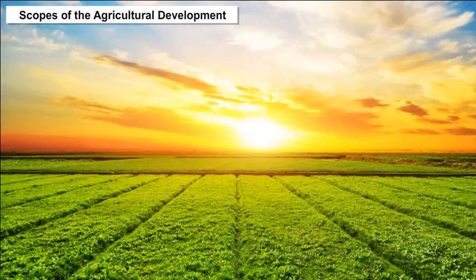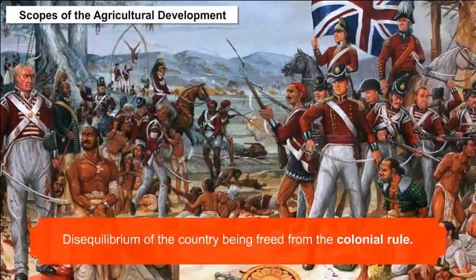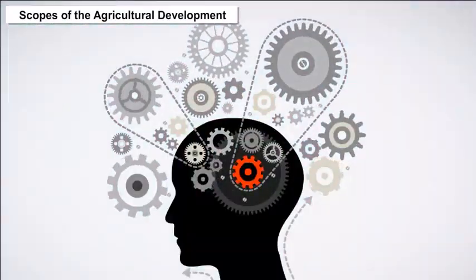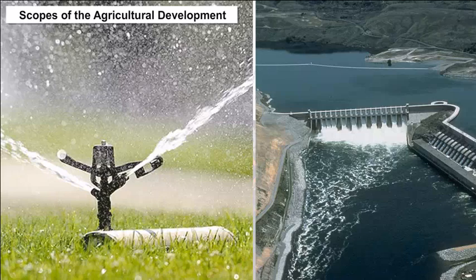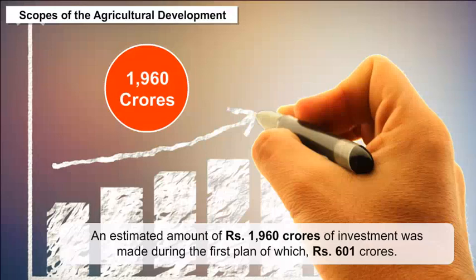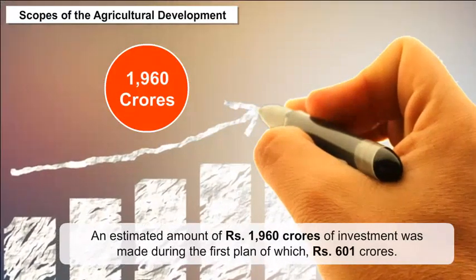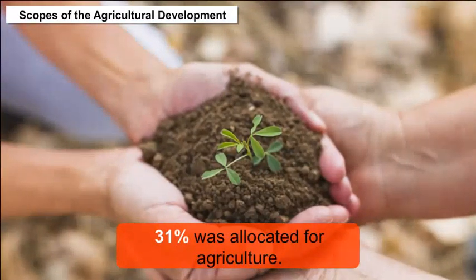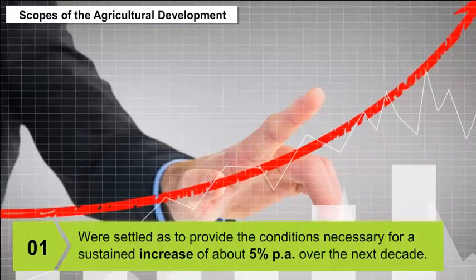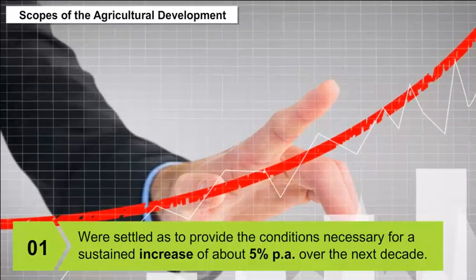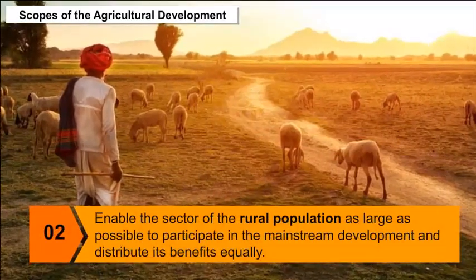The chief objective of the first five-year plan was to restore the disequilibrium of the country after colonial rule. Earlier plans included long-lasting projects like irrigation and river dam constructions. An estimated investment of 1,960 crore rupees was made during the first plan, of which 601 crore rupees — nearly 31% — was allocated for agriculture. During the fourth five-year plan, two main objectives were set: to provide conditions for a sustained increase of about 5% per annum over the next decade, and to enable as large a portion of the rural population as possible to participate in mainstream development.